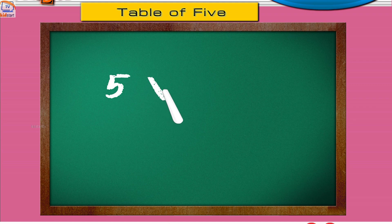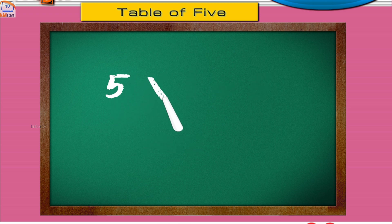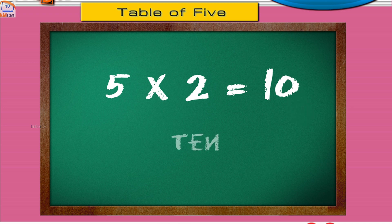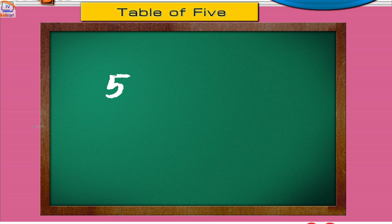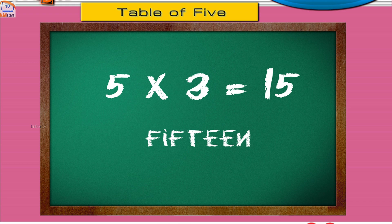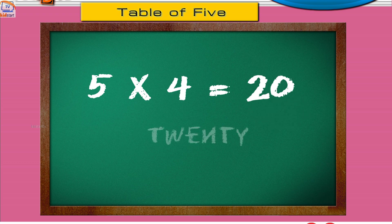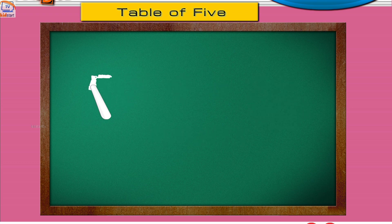Five ones are five. Five twos are ten. Five threes are fifteen. Five fours are twenty. Five fives are twenty-five.